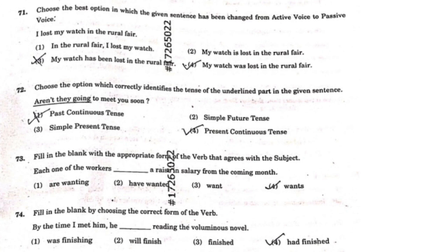The sentence is: 'I lost my watch in the rural fair.' We have four options. If you have seen the rules in the first video, you will know. The correct answer is the fourth option: 'My watch was lost in the rural fair.' Because this is in simple past tense — 'lost' — and so we use the passive rule for simple past. So for question 71, the fourth option is the correct answer.